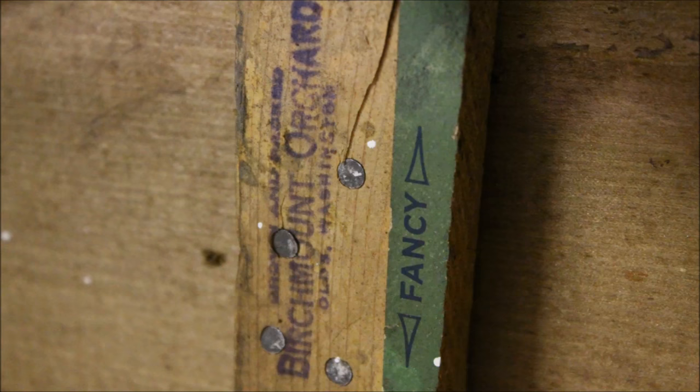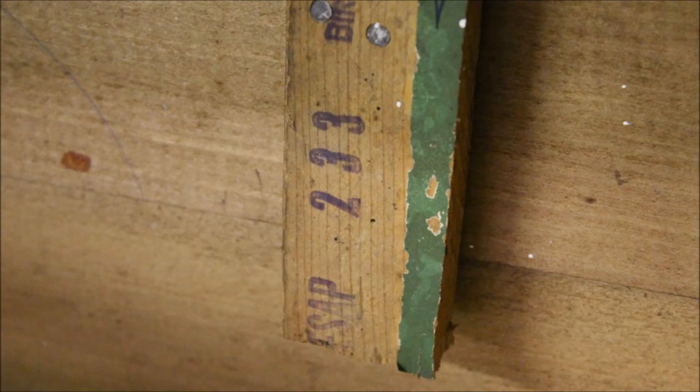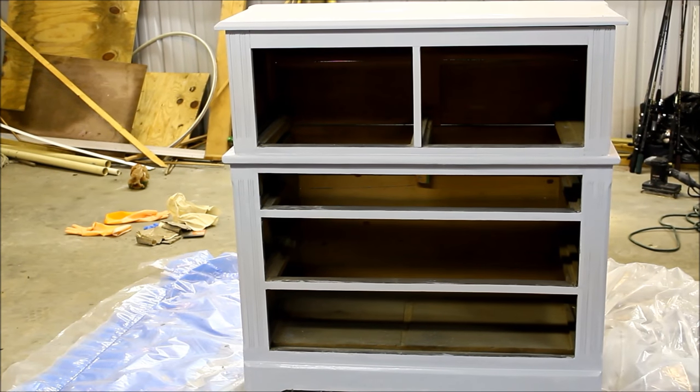I mean, I don't know what that tells me, but that's what they are. I always think it's cool when drawers have locks. I don't know why. One thing that's really interesting is it looks like this piece back here is actually made out of a fruit crate. It says Birchmont Orchard, Olds, Washington.